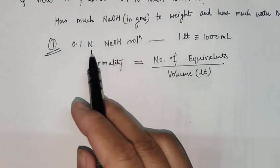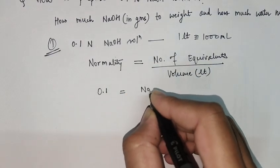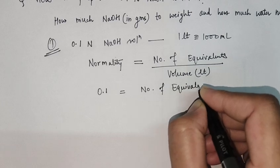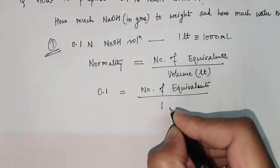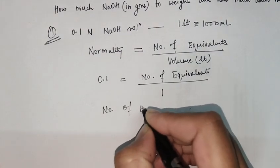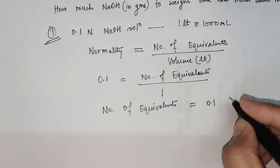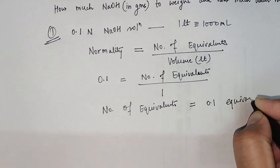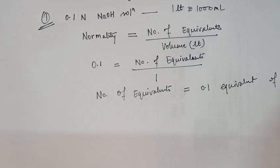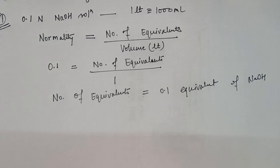The required normality is 0.1. We do not know the number of equivalents yet. Volume is 1 liter. So what we require is 0.1 equivalent of NaOH for our required solution.